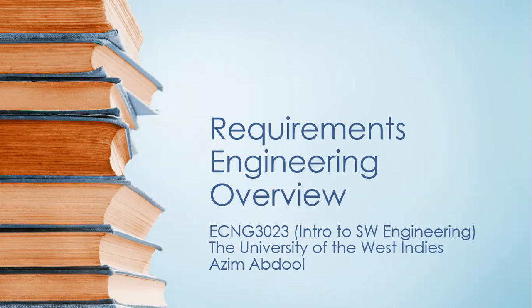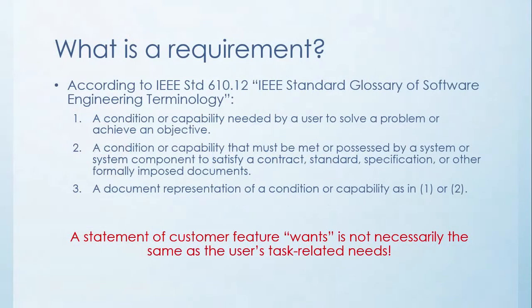In this video I'm going to talk about the requirements engineering process and an overview of it. Let's start with IEEE standard 610.12, the IEEE standard glossary of software engineering terminology. The IEEE is one of the largest professional bodies in the computer science industry and they dictate a lot of these kinds of definitions for terminology.